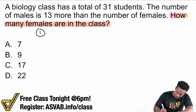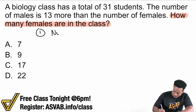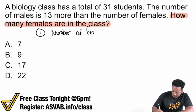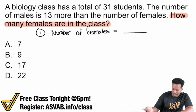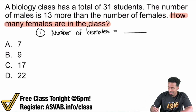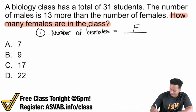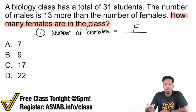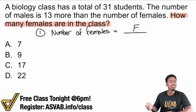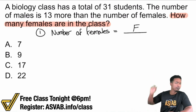Starting off, what do I want? Well, what I want is the number of females. So I'll just say: number of females equals blank. I'll go ahead and say F for now. We'll make some equation, but I'm just going to say F for females.